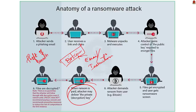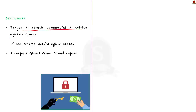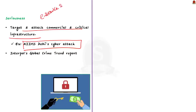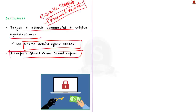How serious are ransomware attacks? Ransomwares mainly target commercial and critical infrastructure. Recently, AIIMS Delhi faced a cyber attack suspected to be a ransomware attack. The entire e-services of the hospital came under attack, and only partial files were recovered by the Intelligence Fusion and Strategic Operations Division of Delhi Police. Currently, all hospital services are being executed manually. Considering its seriousness, even Interpol's Global Crime Trend Report placed ransomware as the second highest threat after money laundering.